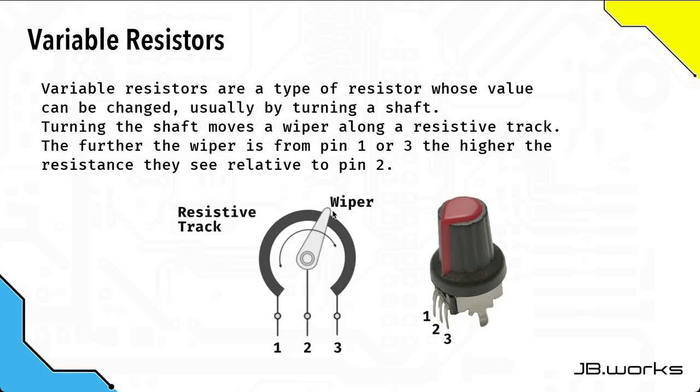On the other hand if with the wiper still over here on the left hand side if we measure the resistance between pins two and three that's going to be much higher because you've got a lot more resistive track between the two pins namely two and three.